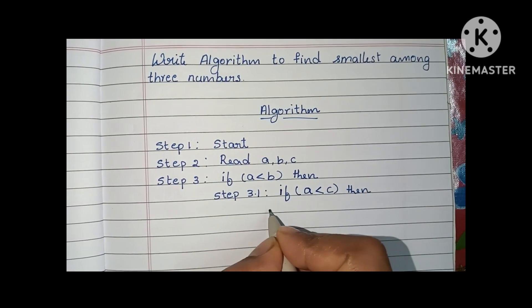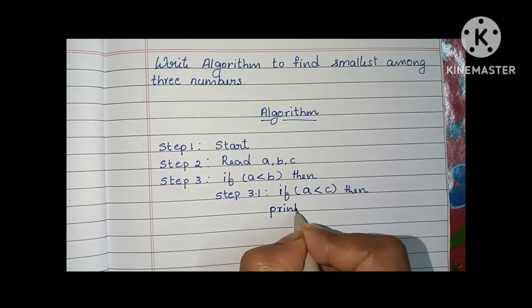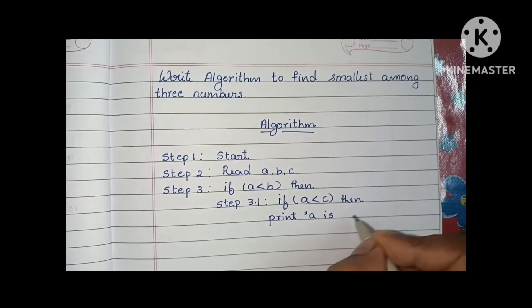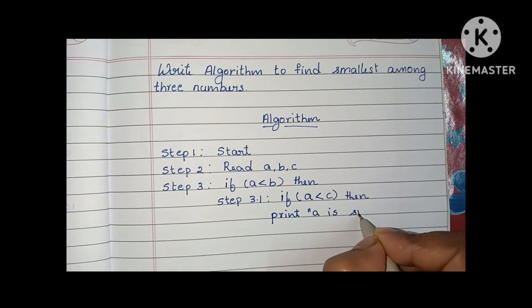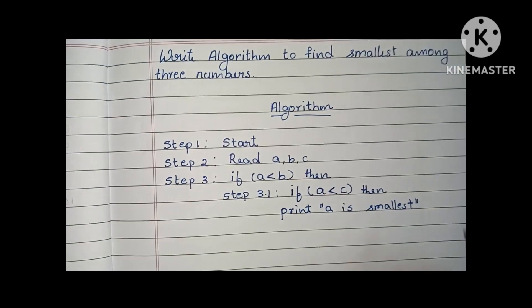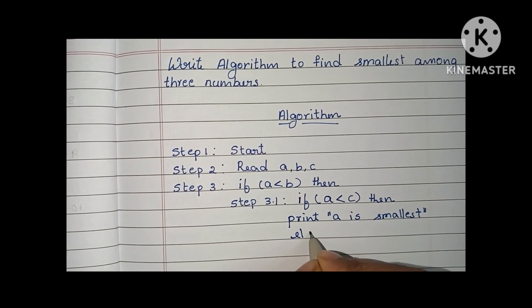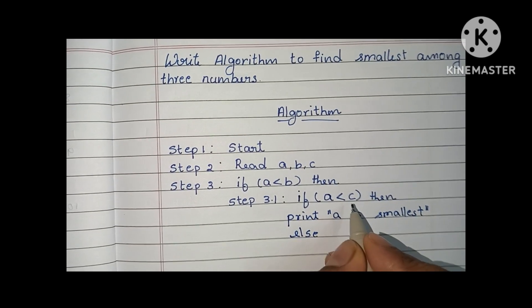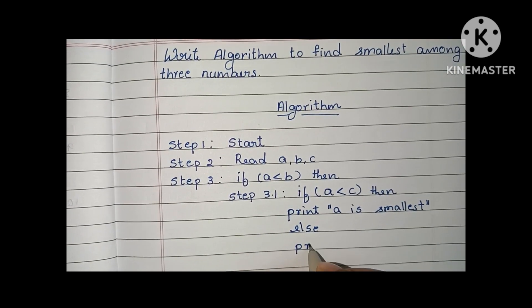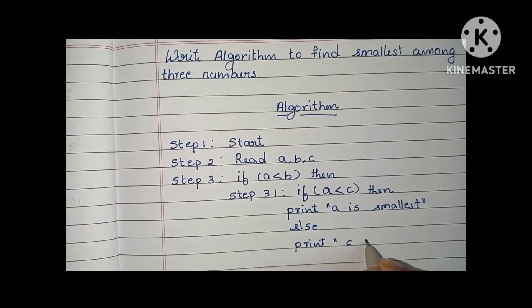If a less than c is true, we print 'a is the smallest.' Else, if a less than c is false, we print 'c is the smallest.'